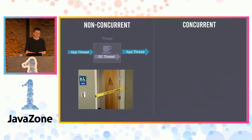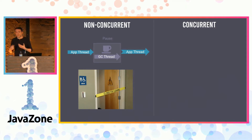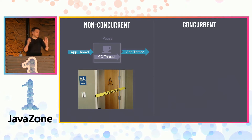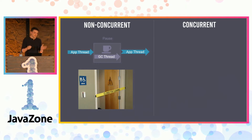The non-concurrent collectors are very rude — they don't care about your application. When your application is using too much heap, the collector comes and says, I have to clean it. Stop. I don't care what you are doing. Your application is completely blocked — it's stop-the-world, as they say in jargon. And this can last for seconds, which is not nice for your users.